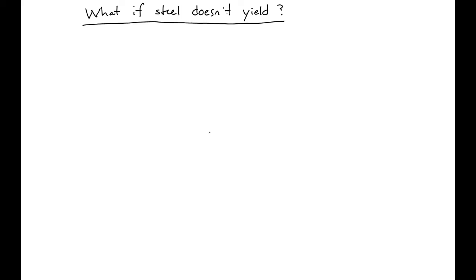In this video we'll look at how we analyze a section if the steel doesn't yield. We're going to look at the same rectangular section that we've been looking at before, with some area of steel.